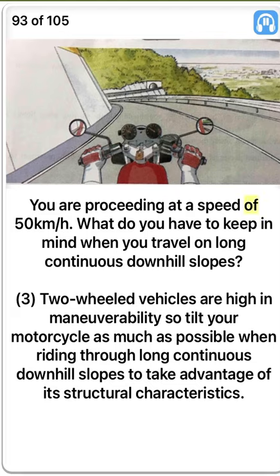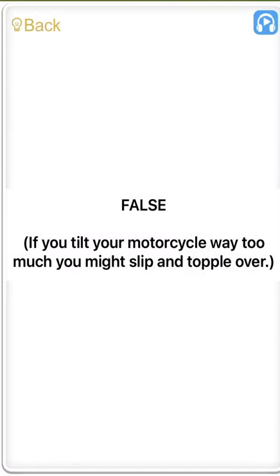You are proceeding at a speed of 50 km per hour on long continuous downhill slopes. True. Two-wheeled vehicles are high in maneuverability, so tilt your motorcycle as much as possible when riding through long continuous downhill slopes. False. If you tilt your motorcycle way too much you might slip and topple over.